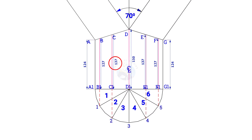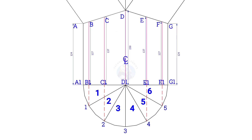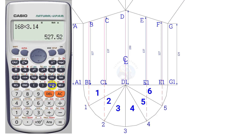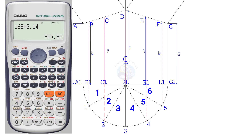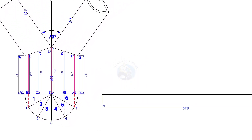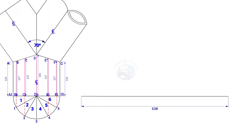Now calculate the circumference of the pipe. Multiply the pipe diameter by 3.14 or pi. Since the diameter of the pipe is 168, multiply it with 3.14. The circumference is nearly 528mm. Draw a 528mm long line. Since we divided the half circle into 6 parts, divide the line into 12 equal parts. 528 divided by 12 is 44, so the length of each segment is 44mm.